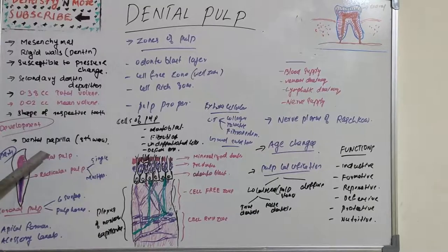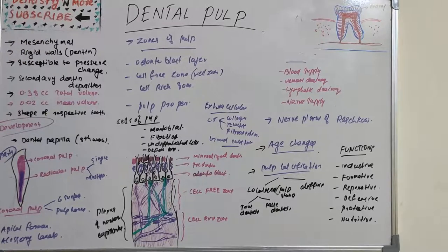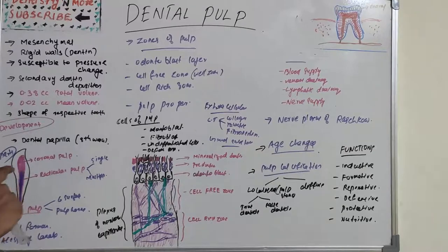There are two types of pulp: coronal pulp, which is present in the crown portion, and radicular pulp, which is in the root portion. Coronal pulp is located within the pulp chamber of the crown of the tooth. In young teeth it resembles the shape of the outer dentine. It has six regions: occlusal, mesial, distal, buccal, lingual, and the floor of the pulp. Pulp horns are projected into the cusps. This pulp constricts at the cervical region where it continues as radicular pulp.